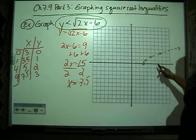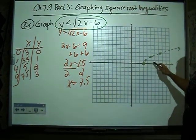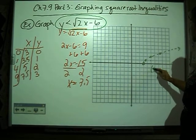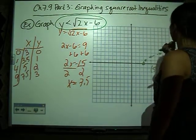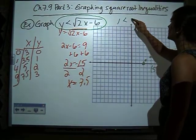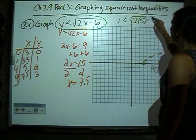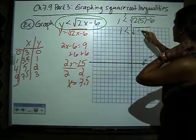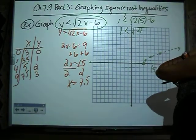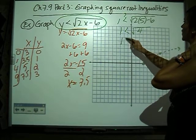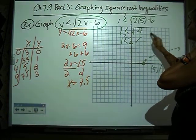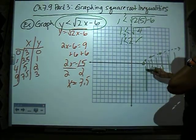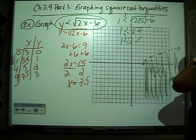So if we pick a test point, we want to make sure it's within our domain. So we're going to pick something like 5, 1. So I put 5, 1 in here. I'm going to have 1 is less than the square root of 2 times 5 minus 6. The square root of 10 minus 6, which is 4. And then I'm going to have 1 is less than 2. Is that correct? Yes. So that means we're going to shade down here.